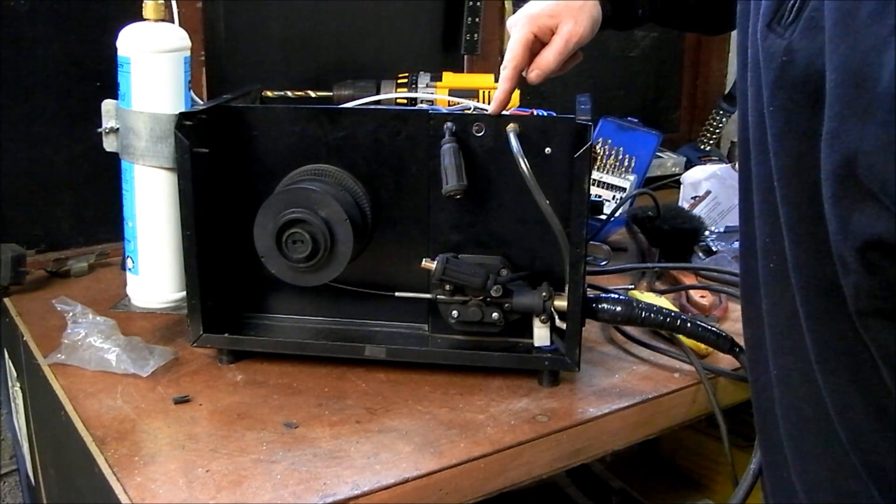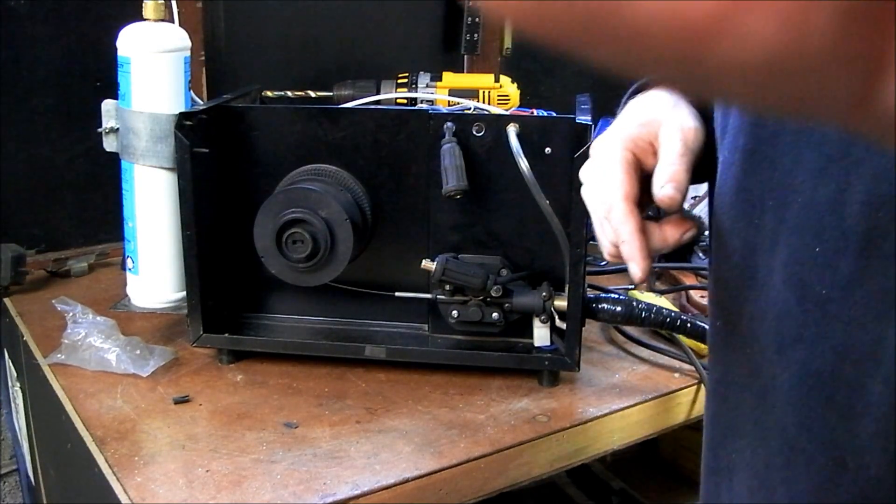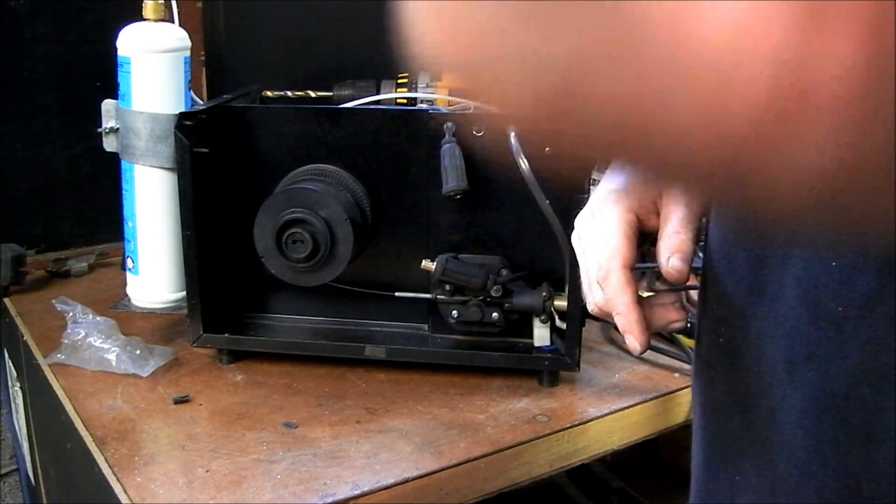I am going to just do the same with the earth. There is no point in showing you every bit of it. I am going to do the same with the earth here. And that will give me the opportunity to be able to reverse them without having to go into the machine again. Now I will just give you a look at this before I put the tinware back on. There is the two connectors there now.